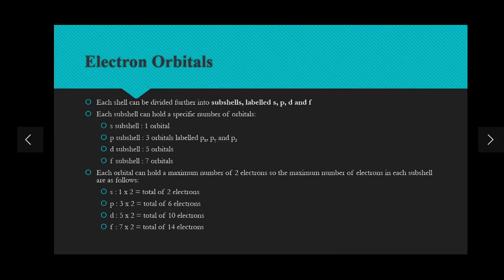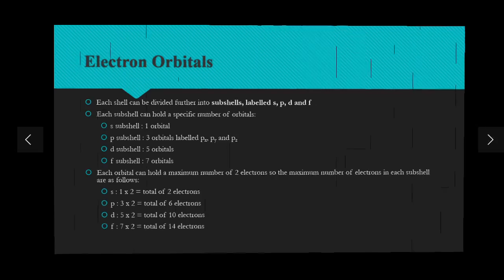The p subshell contains three orbitals, so it holds three times two — a total of six electrons. The d subshell contains five orbitals, so two electrons into five gives a total of ten electrons. For the f subshell we have seven orbitals, so two into seven gives a total of fourteen electrons. Make sure you're aware of this — it's very important at A-level.